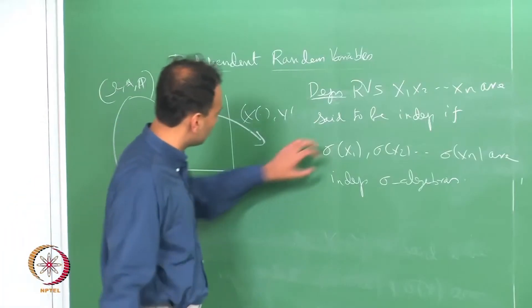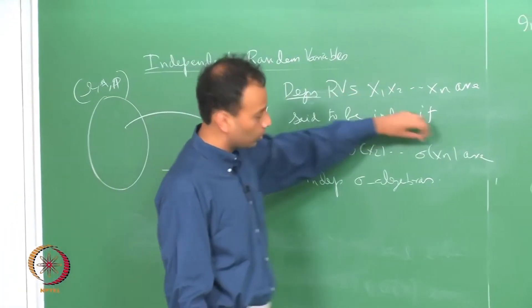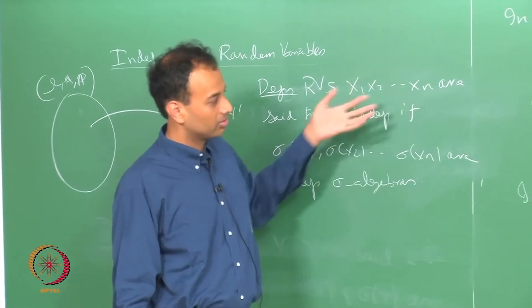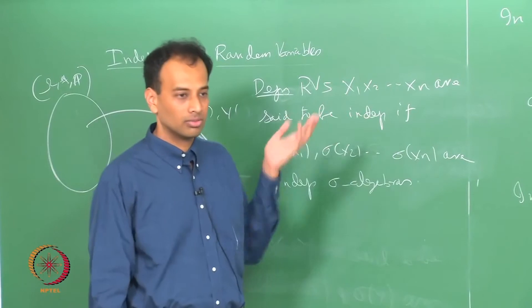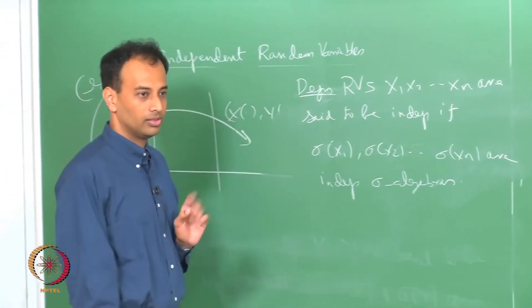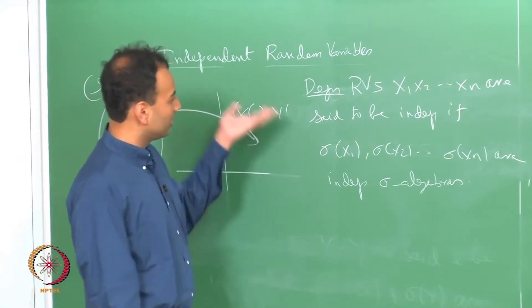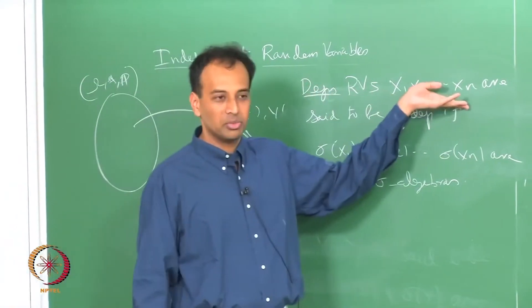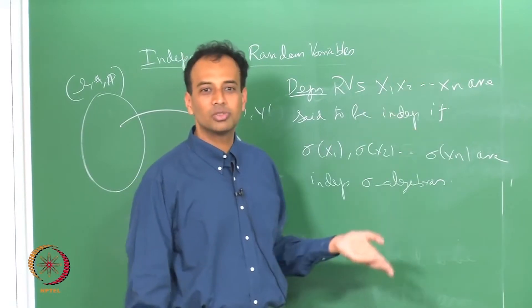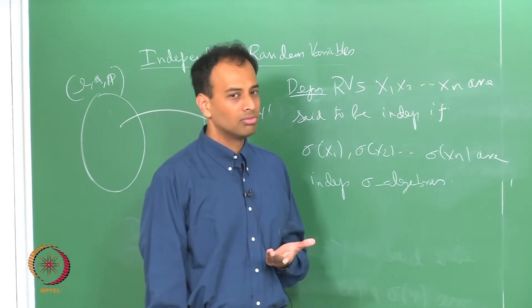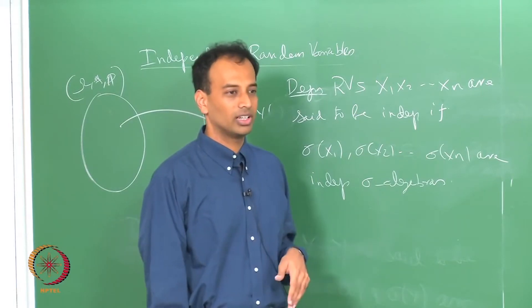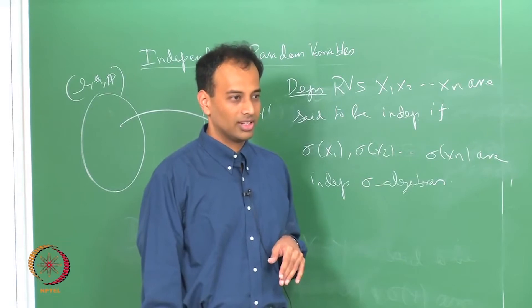This is to be understood the same way: you pick any event from each sigma algebra, and you will end up with n events — n Borel sets — and you should have independence among them. And actually there is no sanctity in taking only n of them; you can take any arbitrary collection of random variables and define independence in terms of the corresponding collection of sigma algebras.